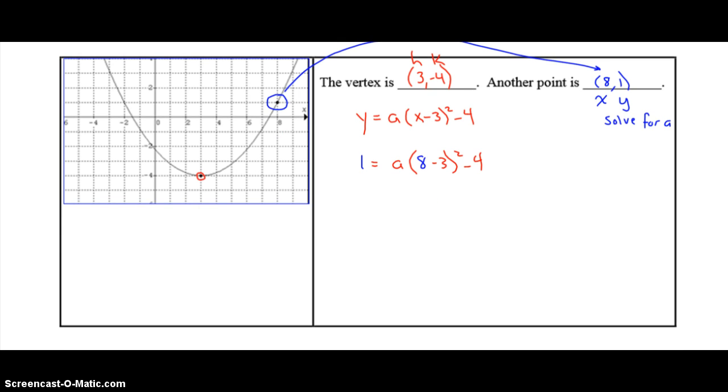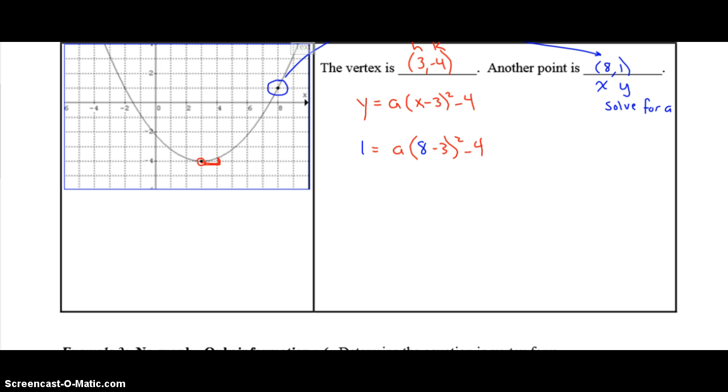So the 1 is going to go in for the y, the 8 is going to go in for the x. All right, so all we've done is the x became 8, the y became 1 because that was our extra point. Now you follow bed mass as much as you can, and this is going to allow us to figure out what the a value is. So in bed mass, the first thing is the brackets. 8 minus 3 is 5. Exponents, 5 squared is 25.